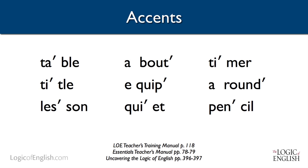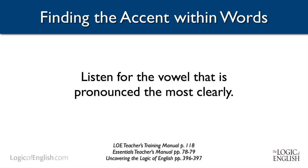You can continue to experiment with the words on the screen or in your training manual. Another tip for finding accent is to actually listen for the syllable where the vowel is pronounced the most clearly. The syllable where the vowel is pronounced the most clearly is the syllable that's accented.